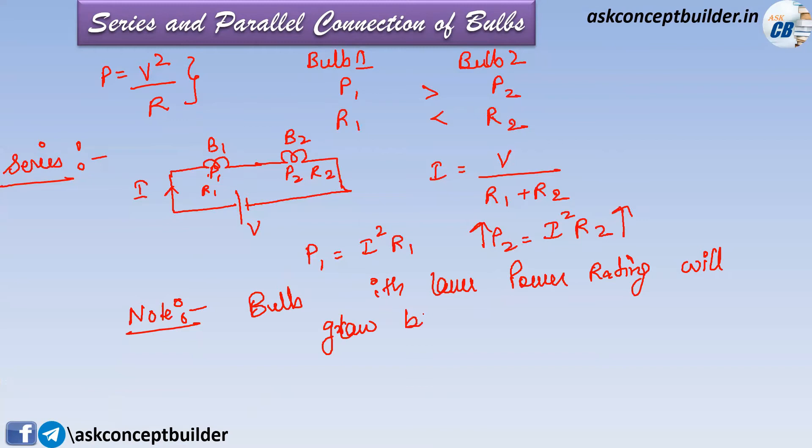It is to be noted that the bulb with lower power rating will glow brighter in series. Now we will see what happens when they are connected in parallel.